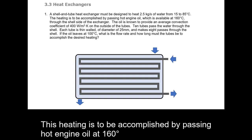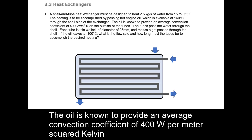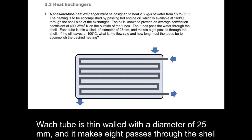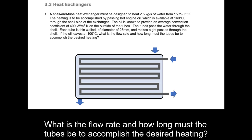This heating is accomplished by passing hot engine oil at 160 degrees Celsius through the shell side of the exchanger. The oil provides an average convection coefficient of 400 watts per meter squared Kelvin. Ten tubes pass the water through the shell, each thin-walled with a diameter of 25 millimeters, making 8 passes through the shell. If the oil leaves at 100 degrees Celsius, what is the flow rate and how long must the tubes be?